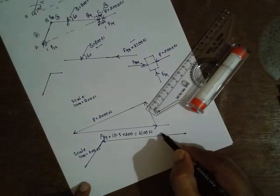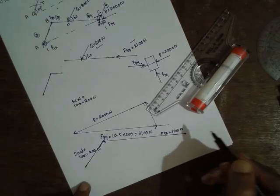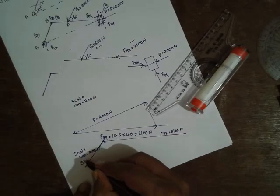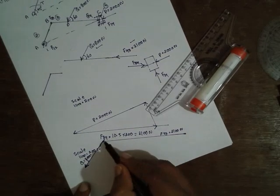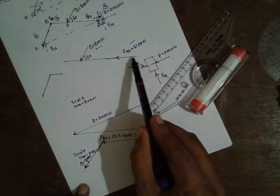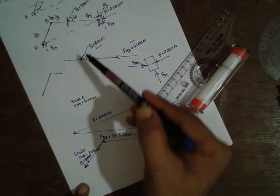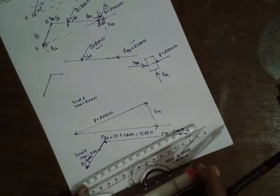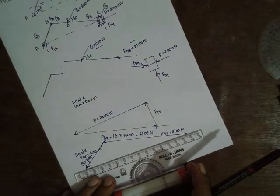Just you have to consider this one and this force in order to find out the resultant, that is F23 we can find out. First we will go for the scale for this diagram. I will consider the scale 1 cm equals 200 N. That means I will draw exactly parallel to this one.